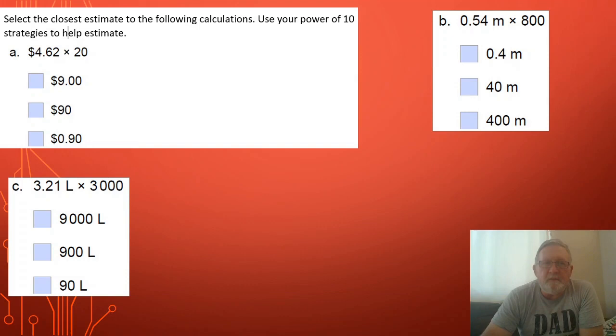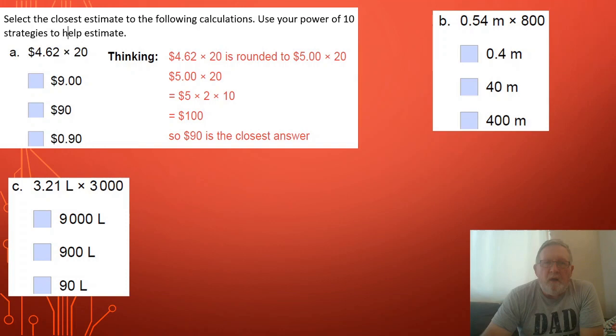If we look at four dollars and sixty two times 20, let's look at A together. This is my thinking. I would round four dollars sixty two to something that I can easily manage, five dollars, and I'd multiply that by twenty. I know that five dollars times twenty can be done more easily as a mental strategy if I break up the twenty into two times ten. Five times two is ten, ten times ten is one hundred.